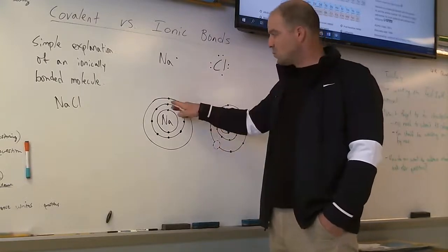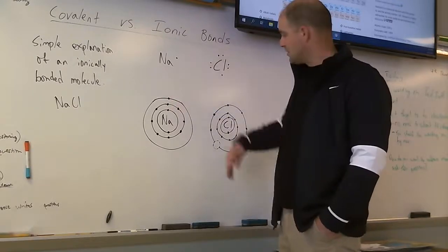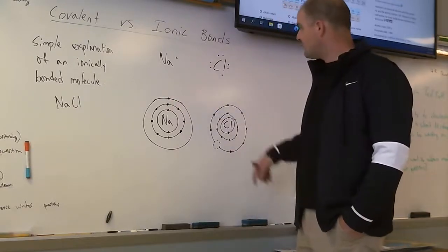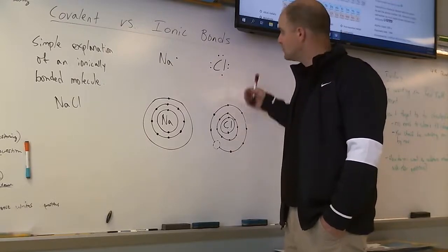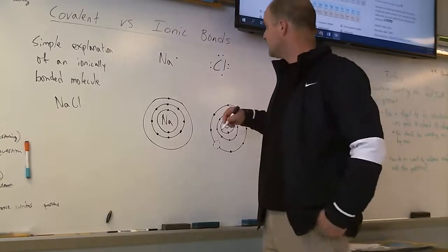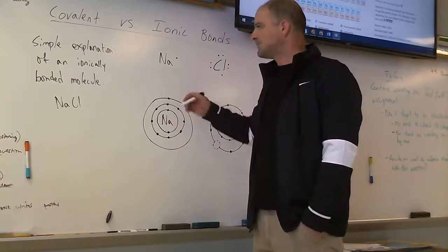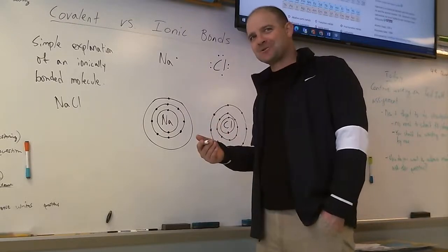Sodium only has one valence electron represented in the Lewis dot structure here, whereas chlorine has seven valence electrons represented in the Lewis dot structure here. And with ionic bonding, it's easy to remember because with covalent you share electrons between the atoms, and with ionic you give or take.